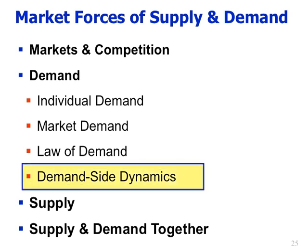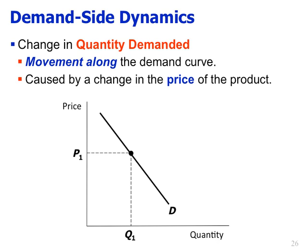Demand-side dynamics refers to changes on the demand side. There are two types: a change in quantity demanded, which is simply a change in that number — a movement along the demand curve caused by a change in the price of the product. That is what the demand curve tells you: for a change in price, how does the quantity demanded change? A change in price causes a movement along the demand curve.